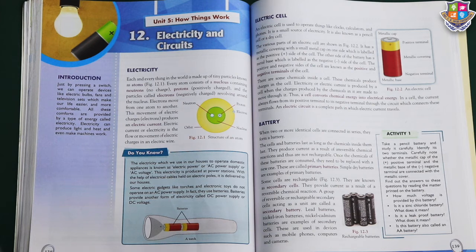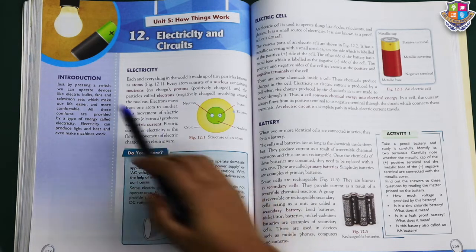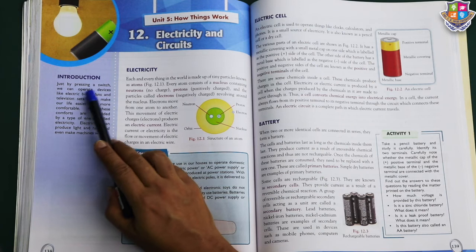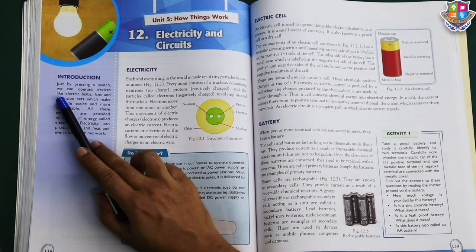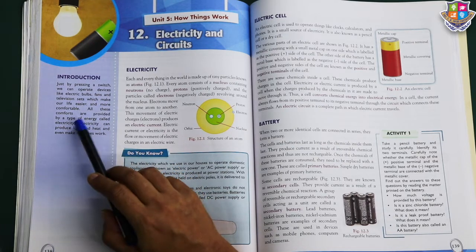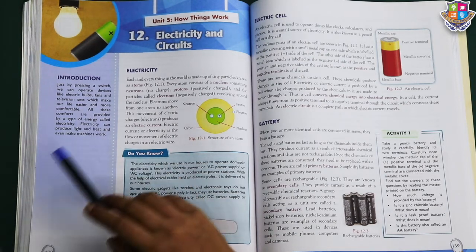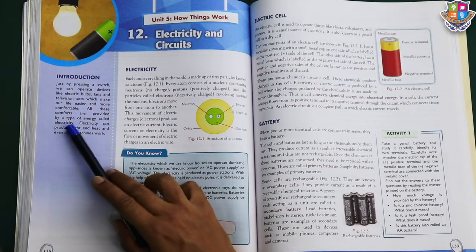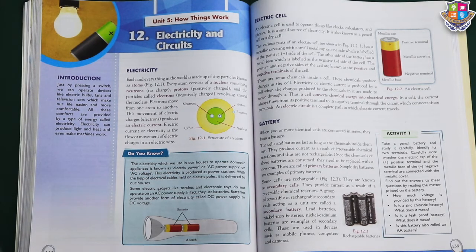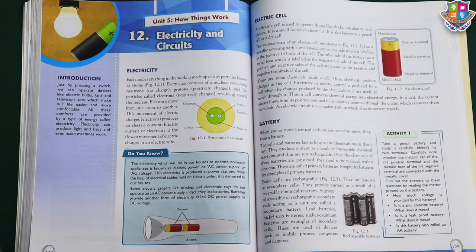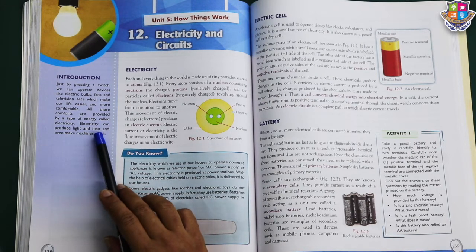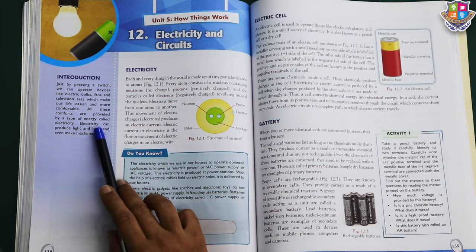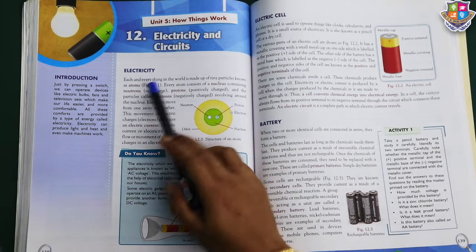Good morning children. Today we will start with the new chapter, that is Chapter Number 12: Electricity and Circuit. First of all, a quick introduction. Just by pressing a switch we can operate devices, isn't it? All these comforts are provided by a type of energy called electricity. Until unless you don't have electric current at your home, switches will not work. So electricity can produce light, heat, and even make machines work. Electricity is a type of power.